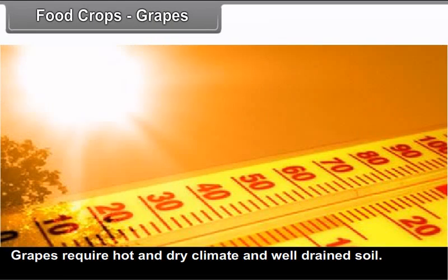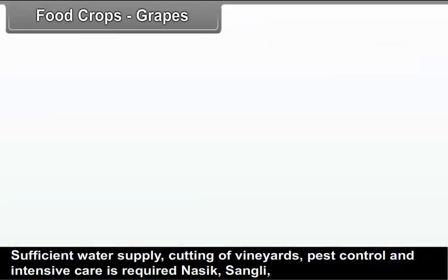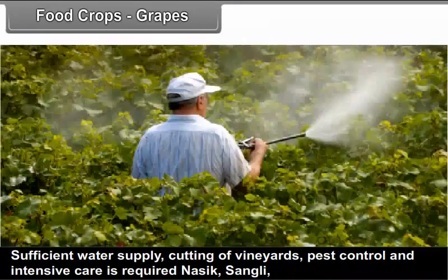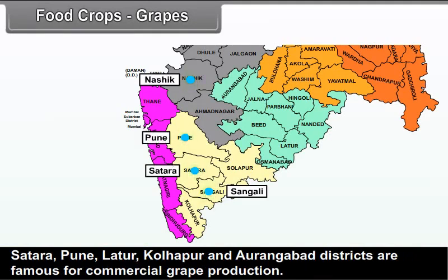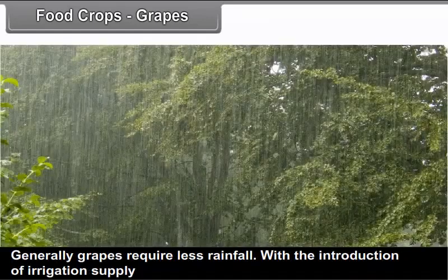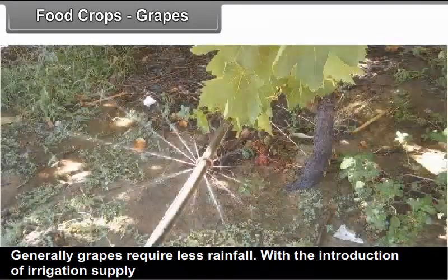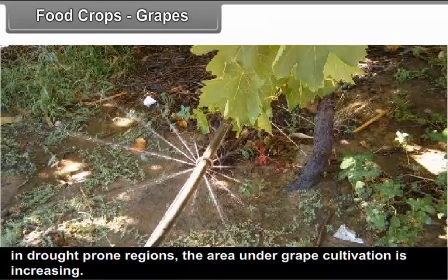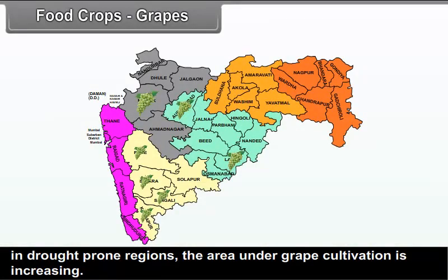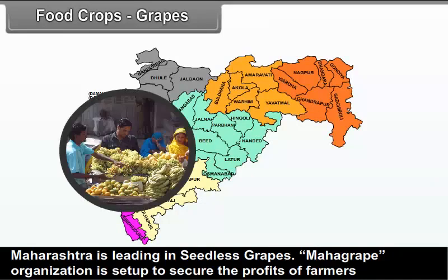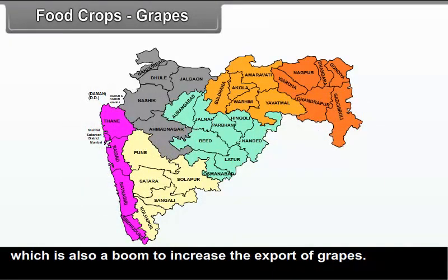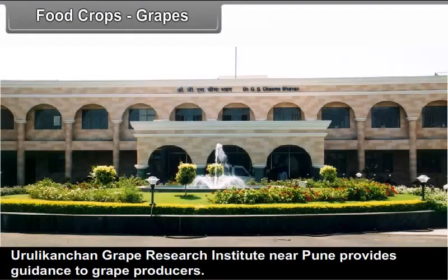Grapes: Grapes require hot and dry climate and well-drained soil. Sufficient water supply, cutting of vineyards, pest control, and intensive care is required. Nasik, Sangli, Satara, Pune, Latur, Kolhapur, and Aurangabad districts are famous for commercial grape production. Grapes generally require less rainfall. With the introduction of irrigation in drought-prone regions, the area under grape cultivation is increasing. Maharashtra is leading in seedless grapes. Mahagrape organization is set up to secure the profits of farmers and boost exports. Uruli Kanchan Grape Research Institute near Pune provides guidance to grape producers.